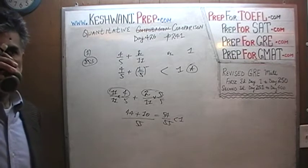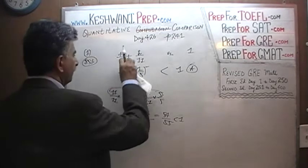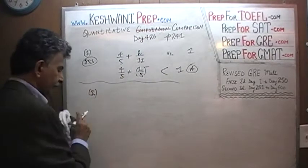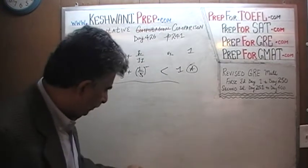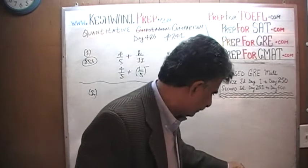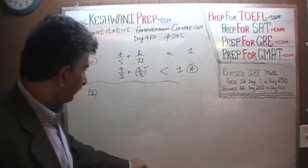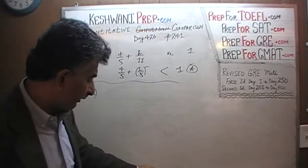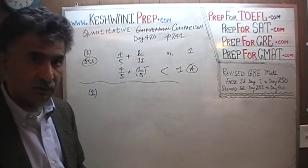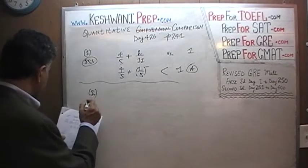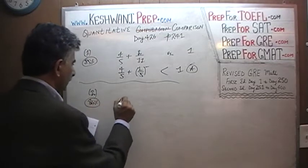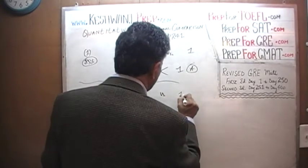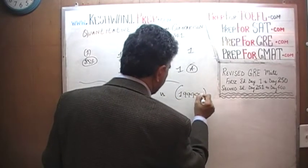Number 2. Problem number 2 is the same situation — we are not going to compute the quantity. These questions are called quantitative comparison, which is why we write down the word 'computation' and cross it out for emphasis. Problem number 2 is the same exact scenario. If you sit there and try to compute everything, it will take you forever. The problem compares 1.9 cubed versus 1.99999 squared.